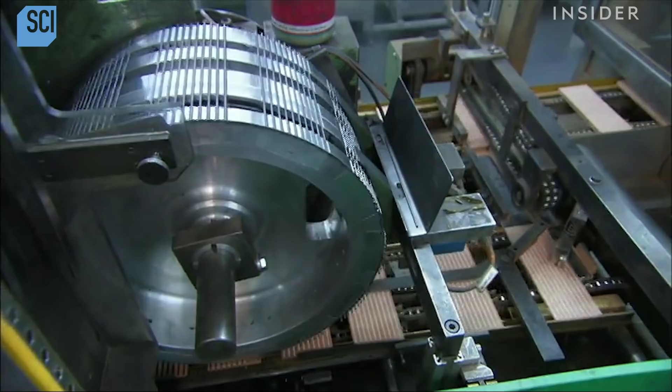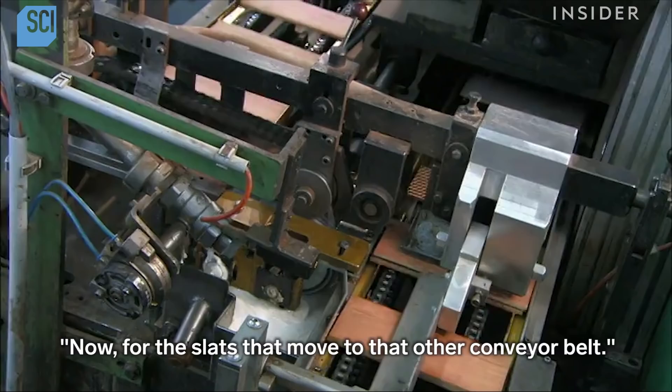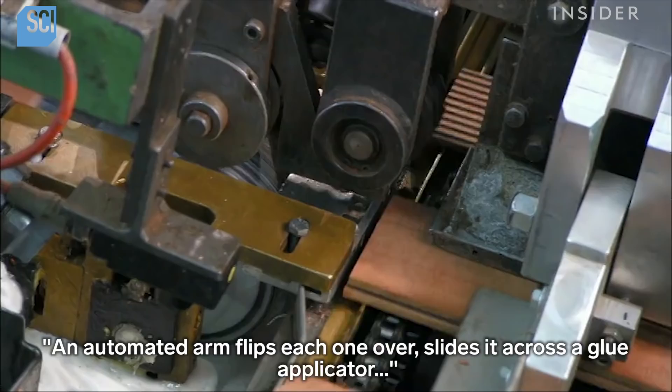Now for the slats that move to that other conveyor belt, an automated arm flips each one over, slides it across a glue applicator, then drops it onto a leaded slat on the other conveyor belt.